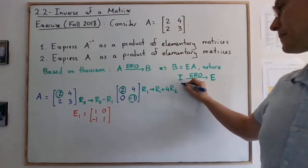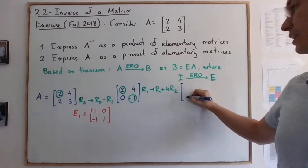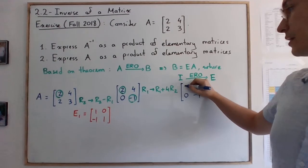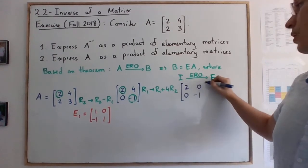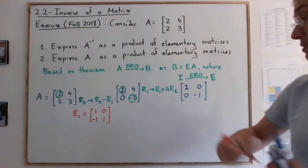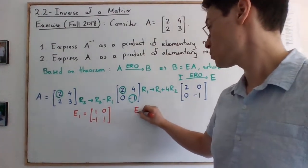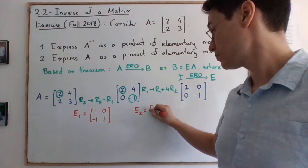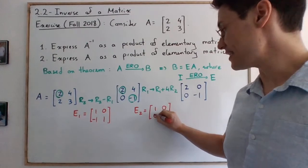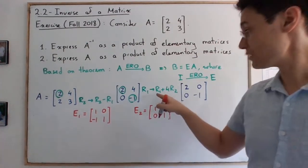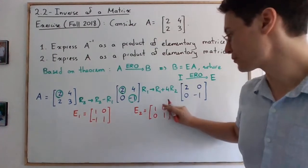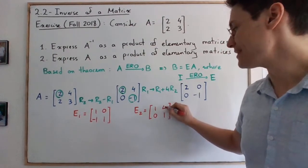So we have 0, negative 1. And then we have here 2, 0. Perfect. And now let's write again the elementary matrix. So again, the identity matrix is this. But then what we do is we change the first row. We're adding 4 times row 2. So we're going to get the 4 right here.